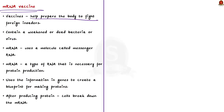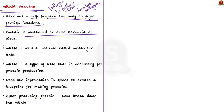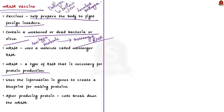Let us learn about mRNA vaccines and how they work. All vaccines help prepare the body to fight foreign invaders — pathogens such as bacteria or viruses — by introducing a harmless piece of a particular bacteria or virus into the body to trigger an immune response. Most vaccines contain a weakened or dead bacteria or virus. However, scientists have developed a new type of vaccine that uses a molecule called messenger RNA rather than part of an actual bacteria or virus — this is the mRNA vaccine. Messenger RNA is a type of RNA necessary for protein production.